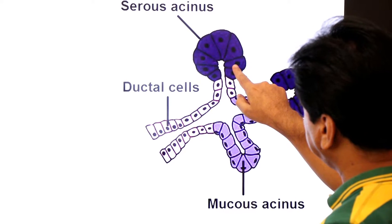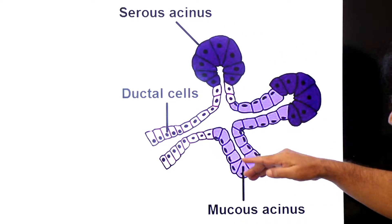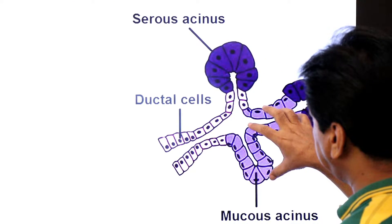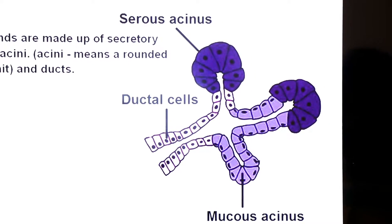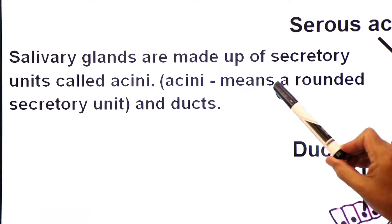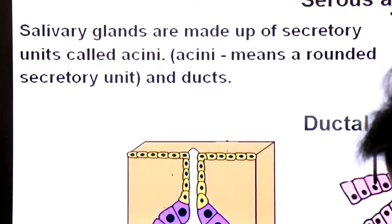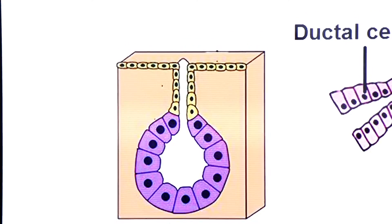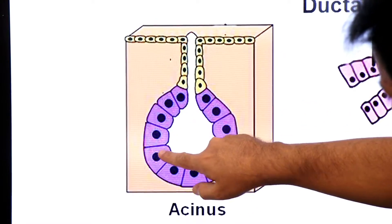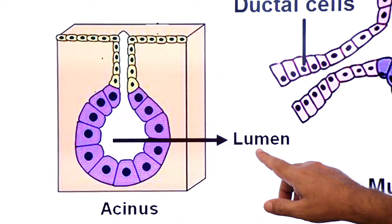If you look at the structure of salivary glands, you can see rounded secretory units. In singular, these are called an acinus, and in plural, acinai. Salivary glands are made up of secretory units called acinai — rounded secretory units — and ducts. The acinus is made up of acinar cells, which secrete saliva into a space known as the lumen.